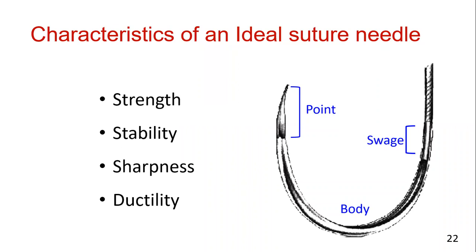Characteristics of an ideal suture needle are: strength, stability, sharpness, and ductility. Regarding stability, the needle performance is also influenced by the way the needle behaves in the grasp of the needle holder.